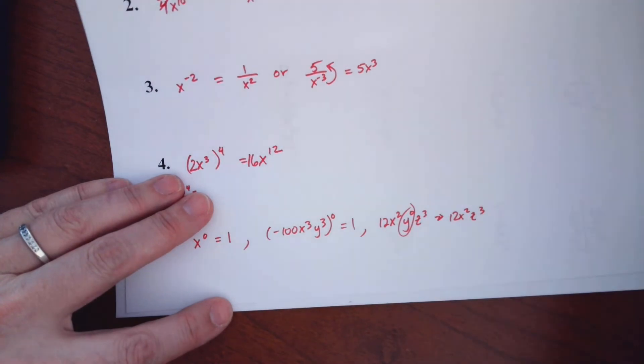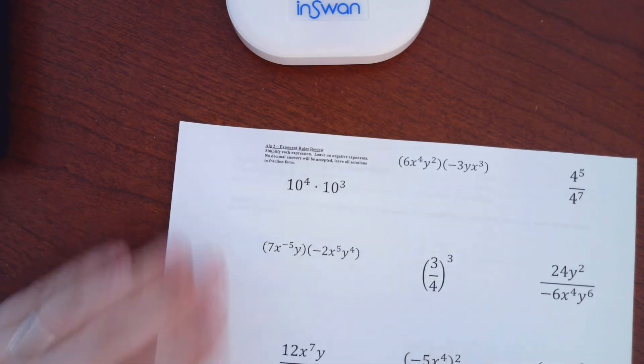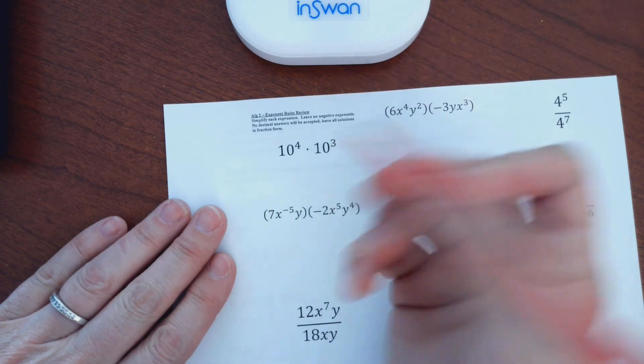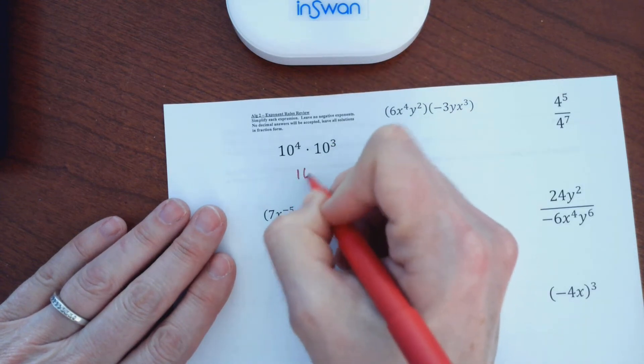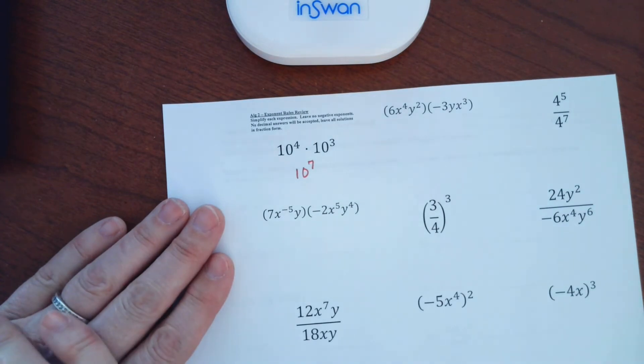All right, so we just have a few problems to go over with you just to use these. And then you have those other problems to do. So let's go ahead and start up here with this basics. We're multiplying, so we add the exponents. So the 10 does not change, but 4 plus 3 is 7. And it's a big number, so you can just leave it like that.